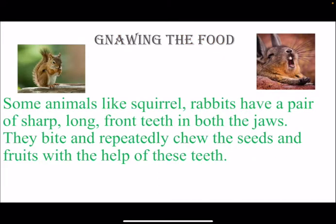Next is gnawing the food. Some animals like squirrels and rabbits have a pair of sharp long front teeth in both jaws. They bite and repeatedly chew seeds and fruits with the help of these teeth. Their front teeth are very long and sharp, and they gnaw the food with the help of these teeth.